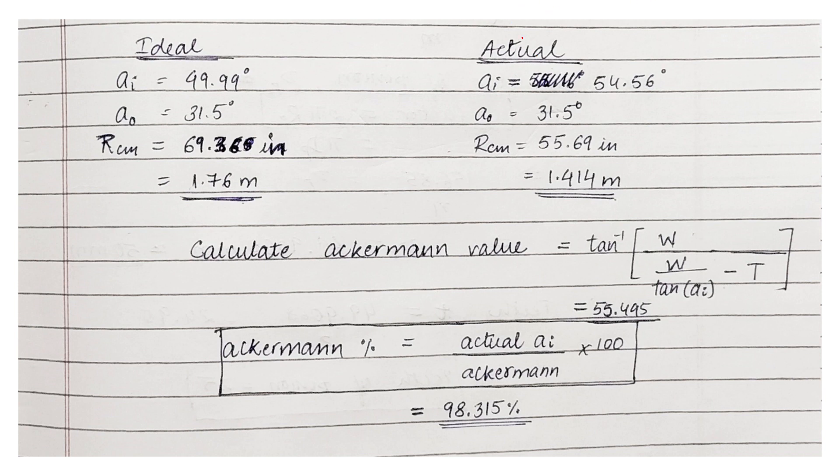Here we get the ideal angles to be 49.99 degrees and 31.5 degrees. Whereas after the geometry we get the inner angle as 54.56 degrees, and the center of mass from the radius of turning from center of the mass to be 1.4 meters.